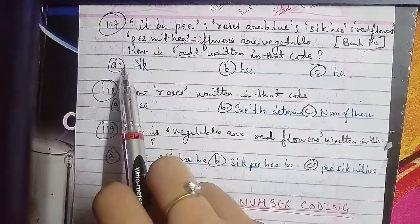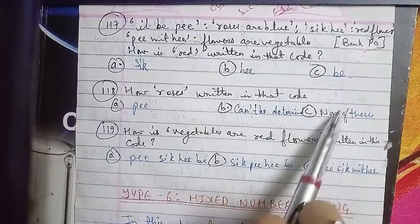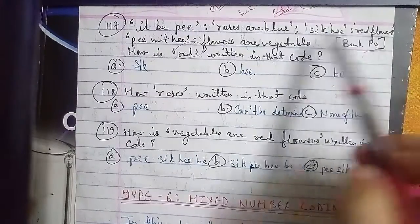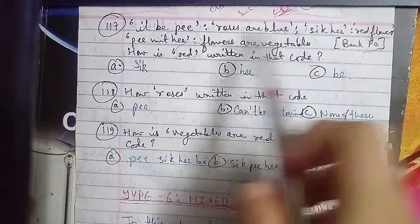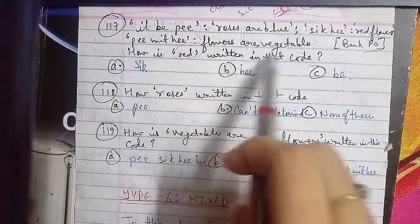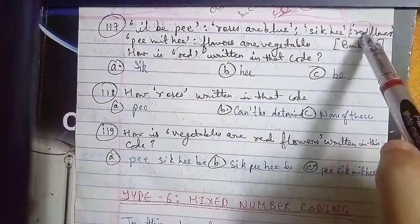Now let's see where red appears. Red is in roses are blue, red flowers, and flowers are vegetables. So red appears here, and flower also appears here. Flower is here in p mit he.